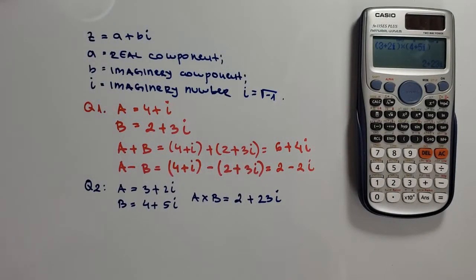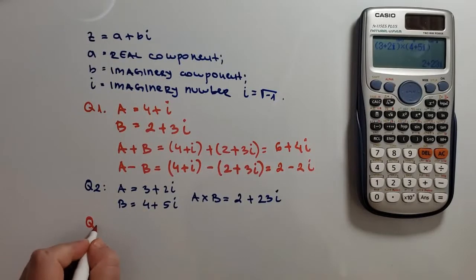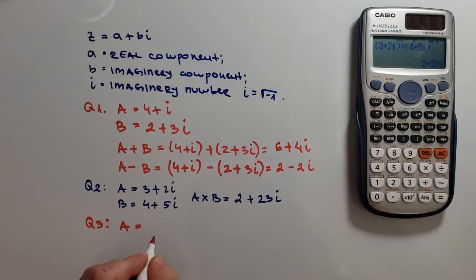And now, the last but not least, division of complex numbers. Here are the vectors. We have vector a, which is equal to 3 minus 2i, and vector b is equal to 4 plus 3i.